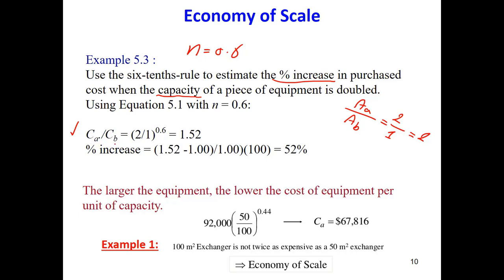CA over CB is AA over AB and power is 0.6. So what we will find here, we will find CA over CB is equal to, from this equation, we will find 1.52.